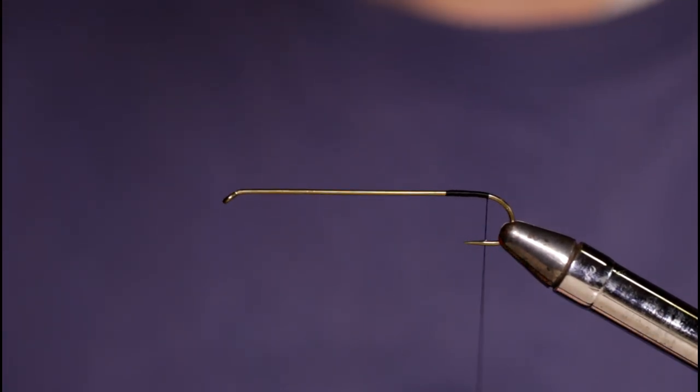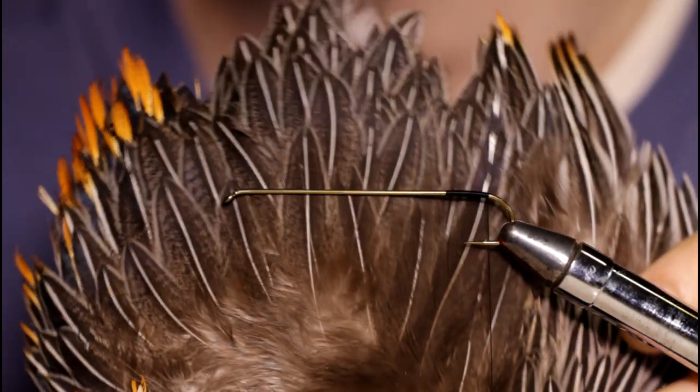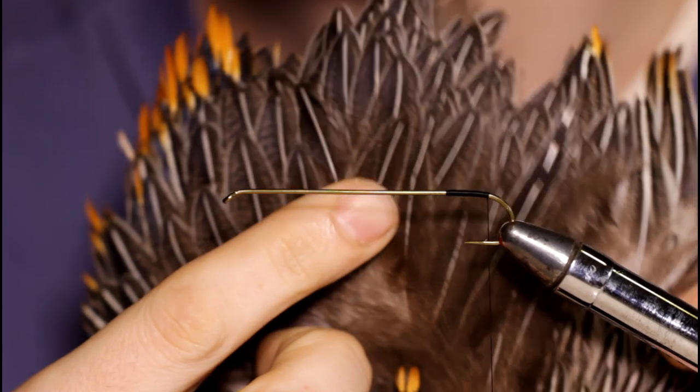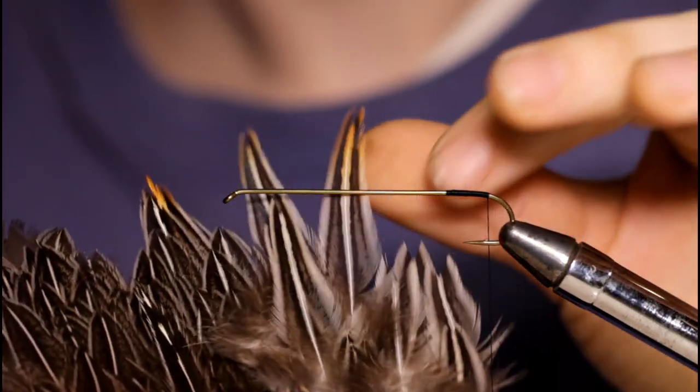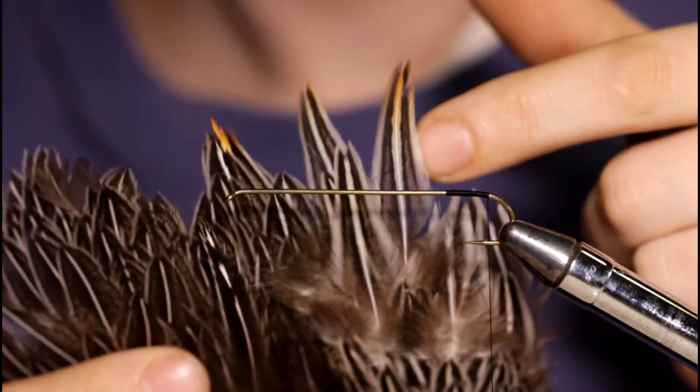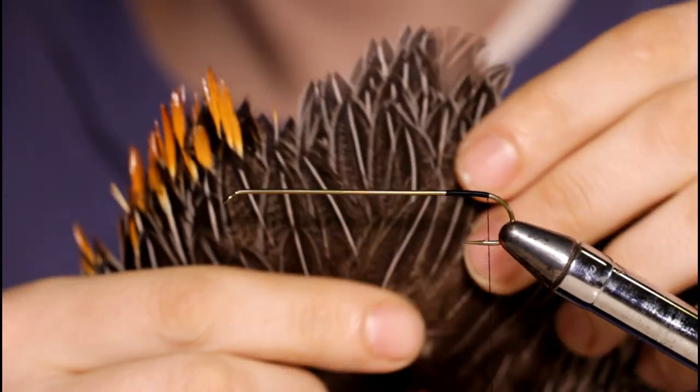I'll stop at the barb. I'm going to grab a jungle cock cape that I have that's been picked over. I'm going to use these body feathers here. These ones on the sides are a little bit longer and thinner, so I think I'm going to use those. They've got a little bit more color to them as well, a little bit more brown.